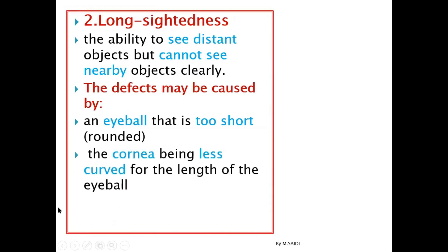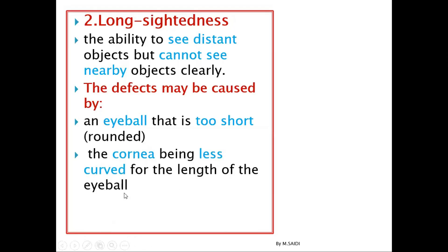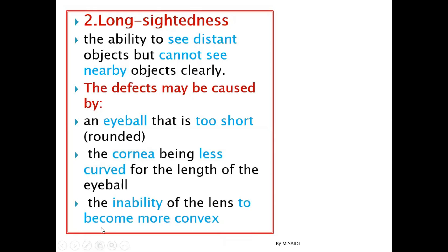Number two, the cornea is less curved, meaning the eyeball is short, so the image is formed behind the retina. Number three, inability of the lens to become more convex to bend the light to the retina — its power is less so it can't focus the light onto the retina. It's like running and supposed to stop at a certain point but bypassing it due to excess speed — the lens fails to bend the light to the retina and the image ends up forming behind it.